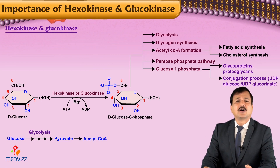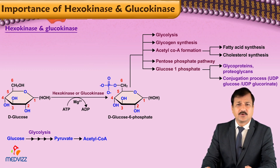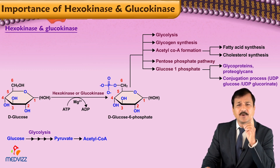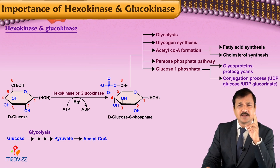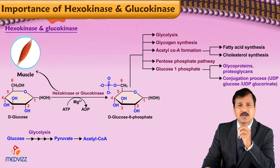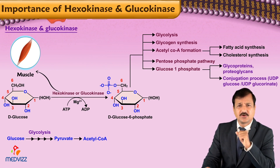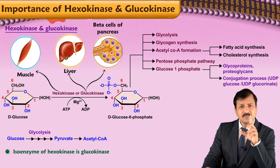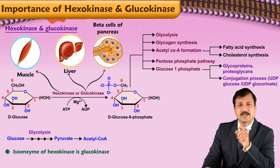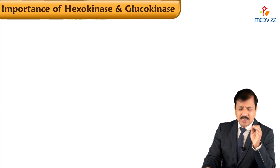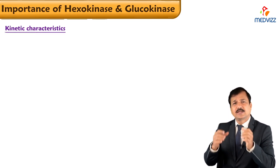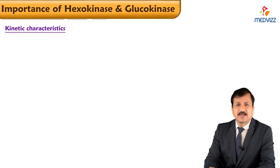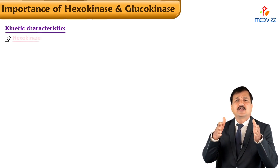There are a variety of reactions that glucose-6-phosphate can go into, and all of this is made possible by conversion of glucose into glucose-6-phosphate done by two enzymes — hexokinase in the extra-hepatic tissues and glucokinase, the isoenzyme of hexokinase, in the liver and beta cells of the pancreas. Let us look at the kinetic characteristics of glucokinase and hexokinase, starting with hexokinase.